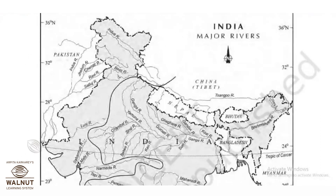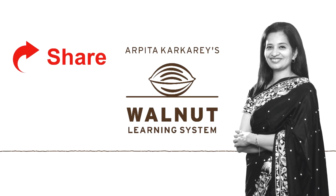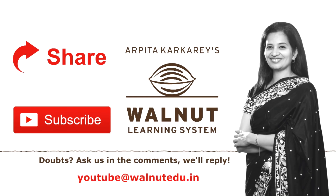Rohtang Pass is visible on the map — Beas River and Ravi River are near that pass. If you like our videos, do share and subscribe to our channel. For awesome quizzes, write to us. Keep watching and keep learning with Walnut.